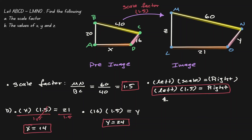Now let's find the value of Z. Z is the length of line segment ML, and that matches with side BA. Using the same relationship, the left-hand side is 20; multiplied by the scale factor of 1.5, we get the length on the right-hand side, which is Z. So Z equals 30.